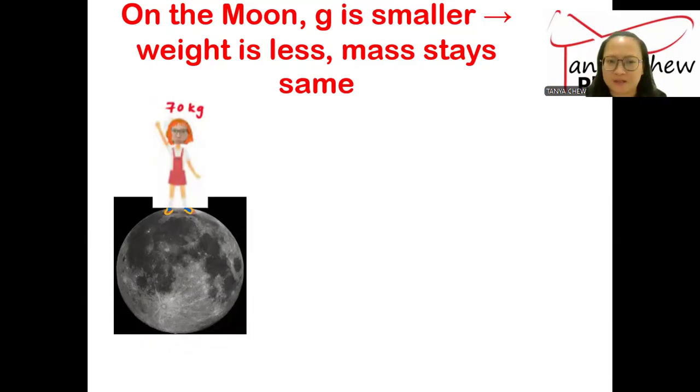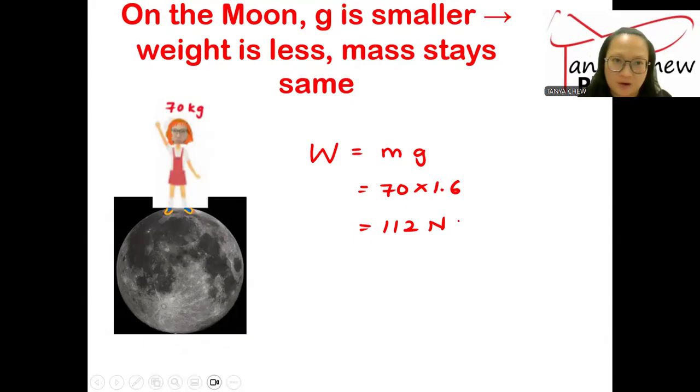This is me, I'm 70 kilograms. You want to see my weight on the Moon? W, just write down W equals mg. M is my mass, which is 70 kilograms, and the gravitational field strength of the Moon is about 1.6. Now take out the calculator, 70 times 1.6. So my weight is about 112 newtons on the Moon. Due to the gravitational field strength which is smaller, due to the size of the Moon that is smaller, the gravitational field strength of the Moon is smaller. That is why your weight is less, but your mass will always stay the same.